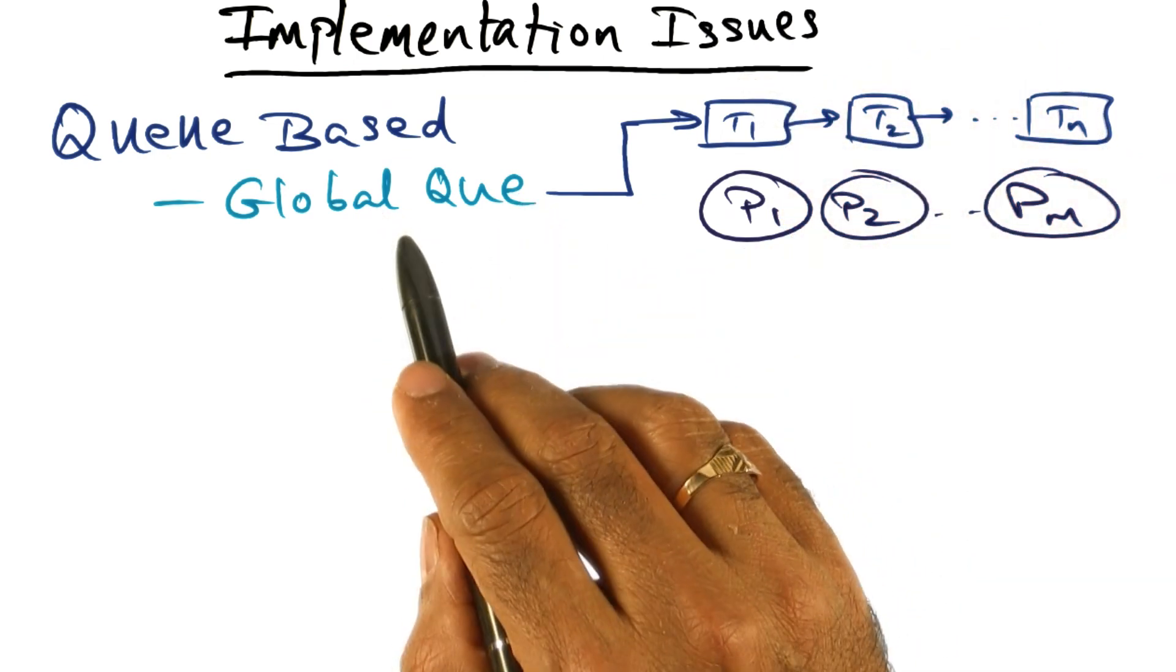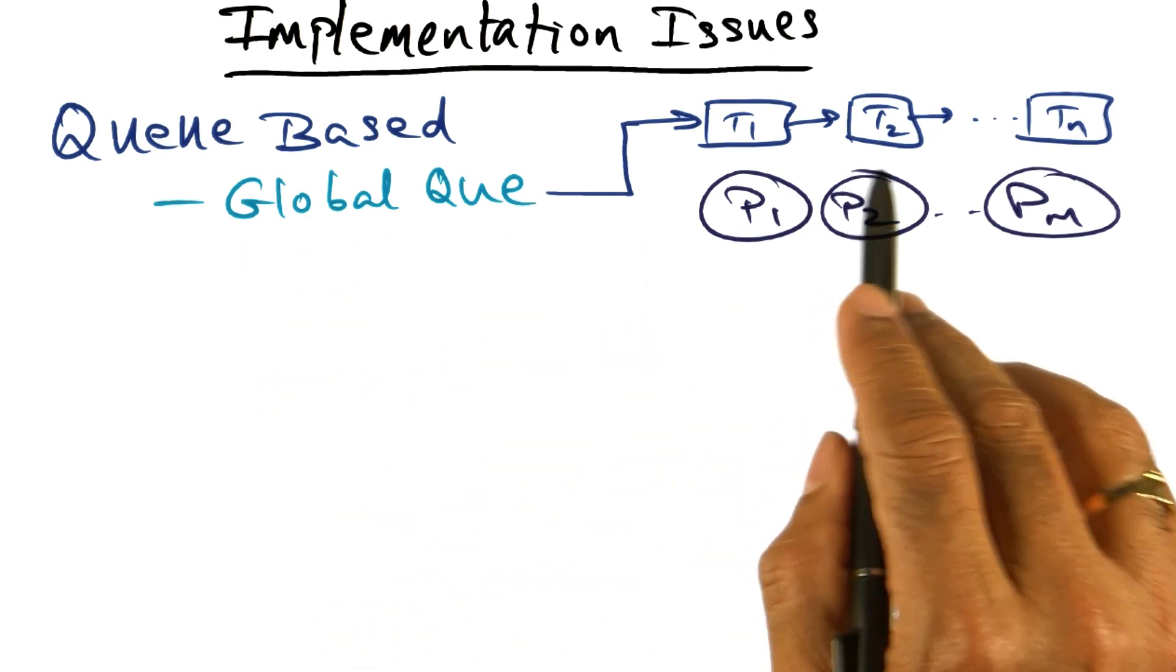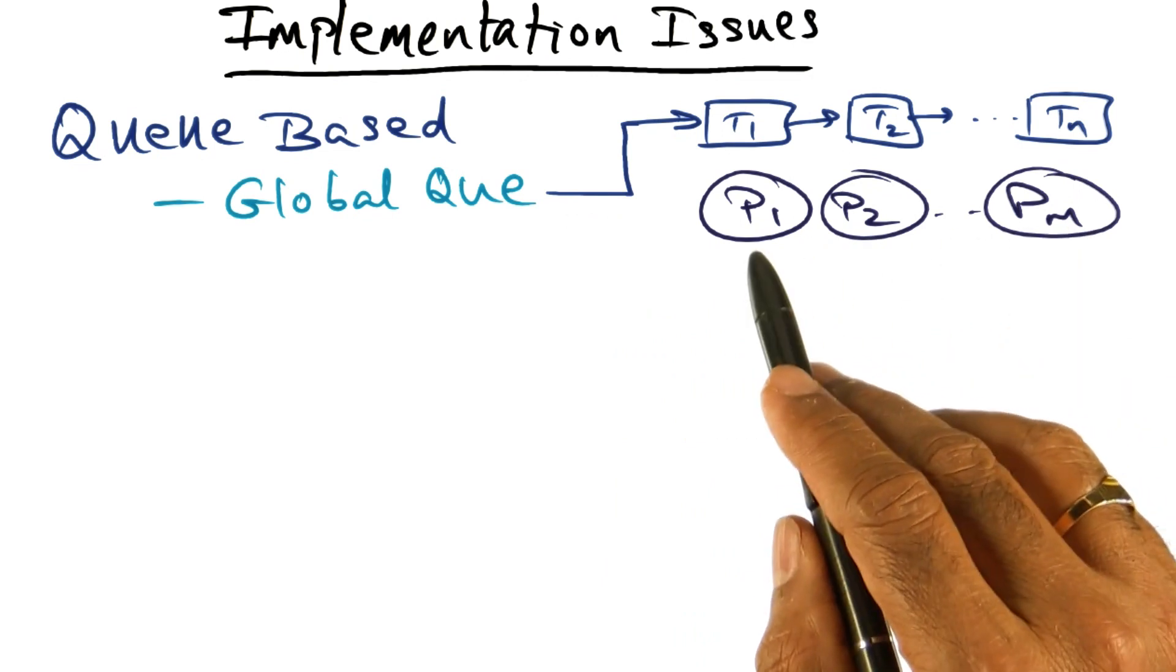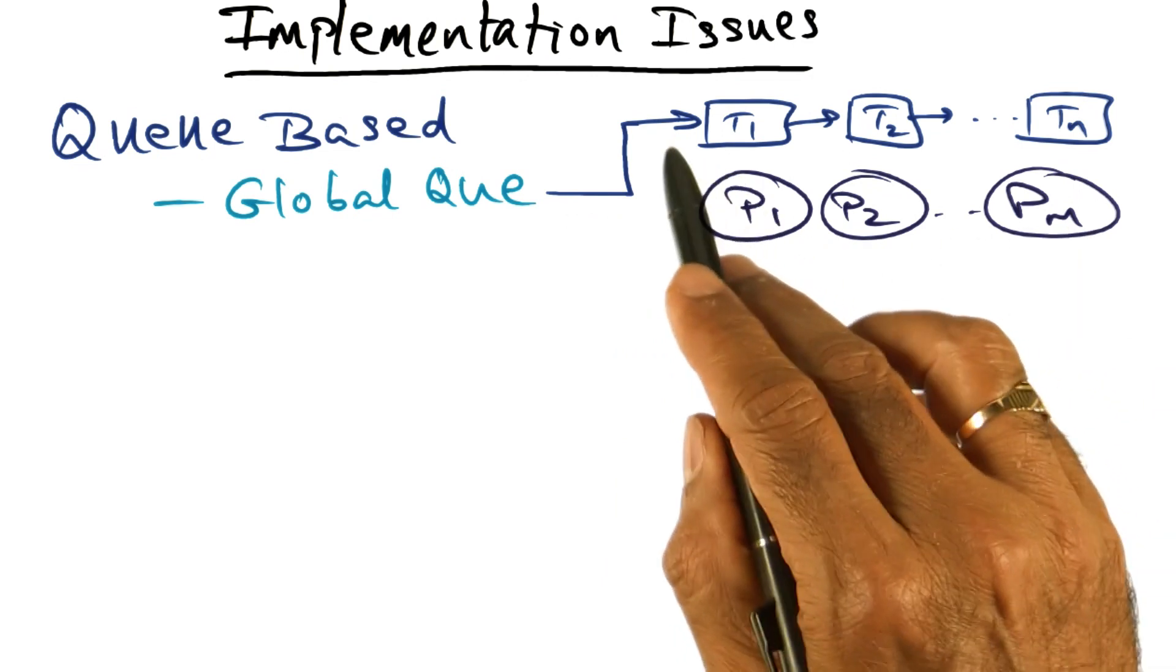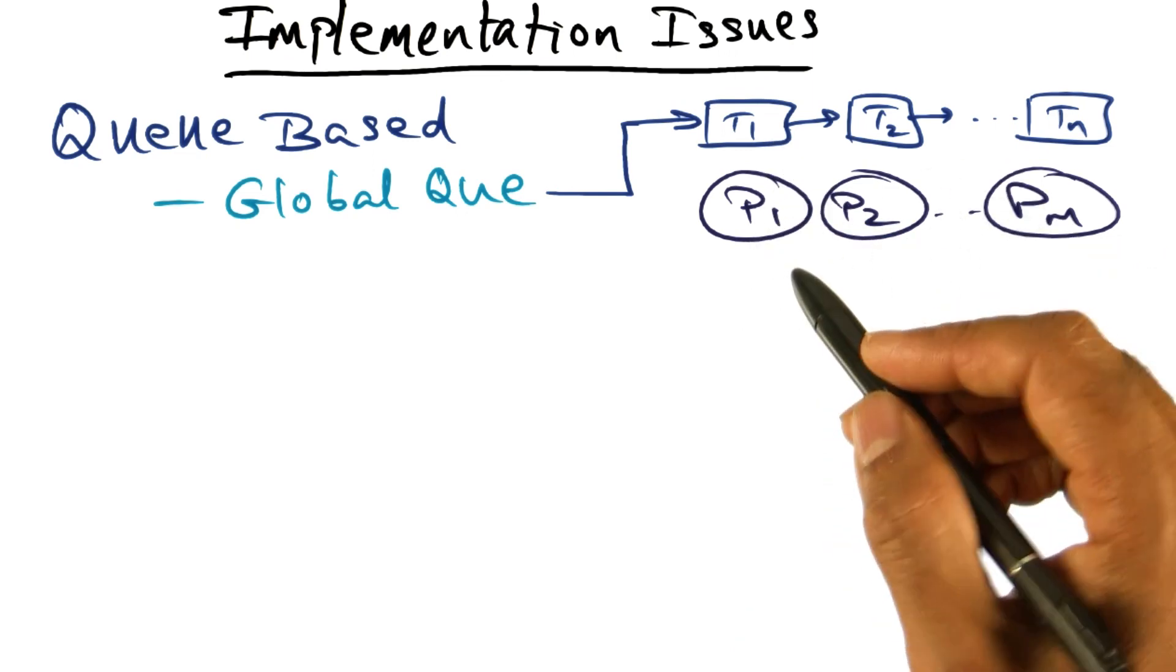One possibility is the operating system to maintain a global queue of all the threads that are runnable in the system. And what these processes might do is, when they're ready for work, they'll go to this global queue and pick the next available thread from this queue and run that on itself.